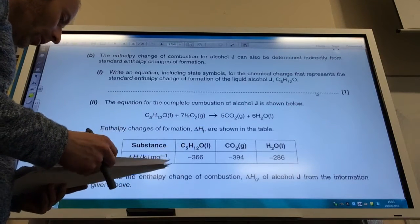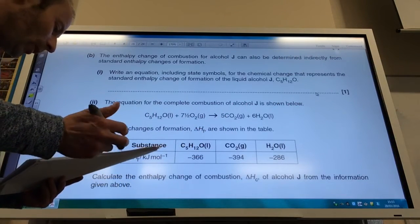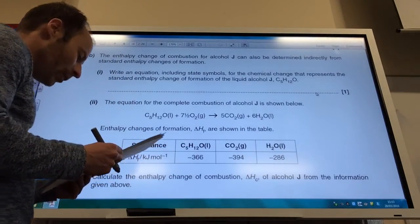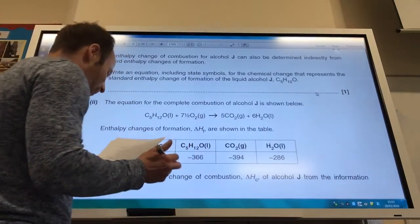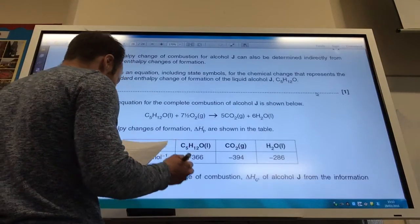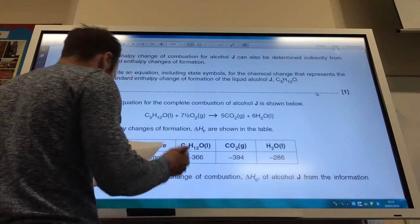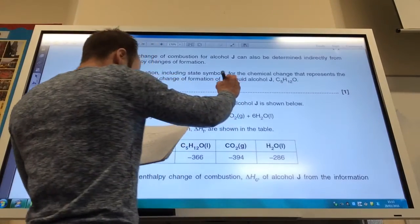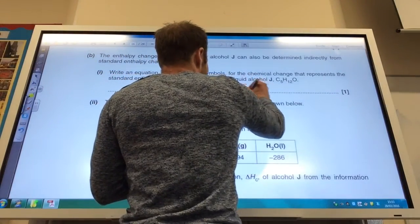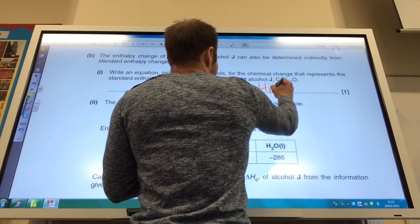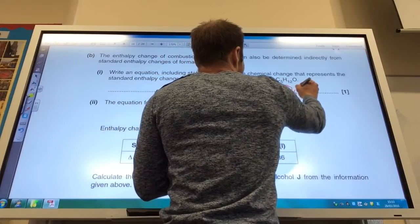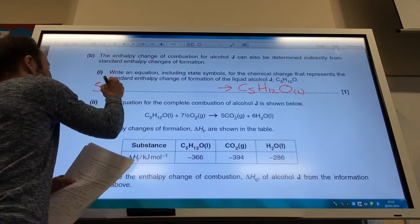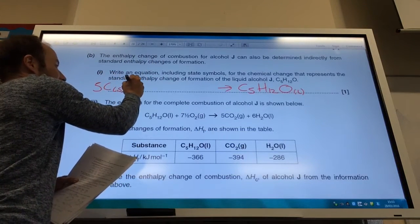Okay, so write one equation, including state symbols, for the chemical change that represents the standard enthalpy change of formation of the alcohol. And it's told me it's a liquid alcohol. So, you've got to get to one mole of C5H12O, and we know it's a liquid, so I need to put that in.